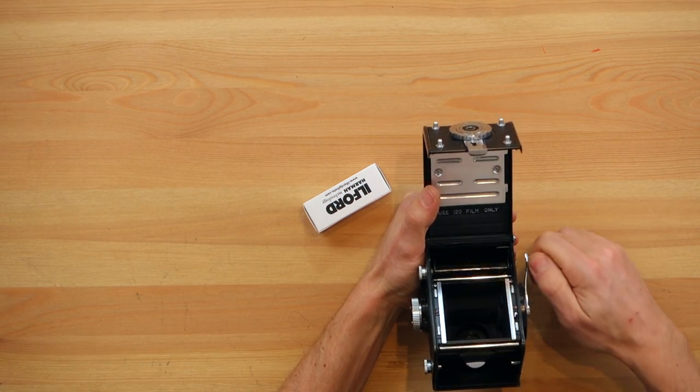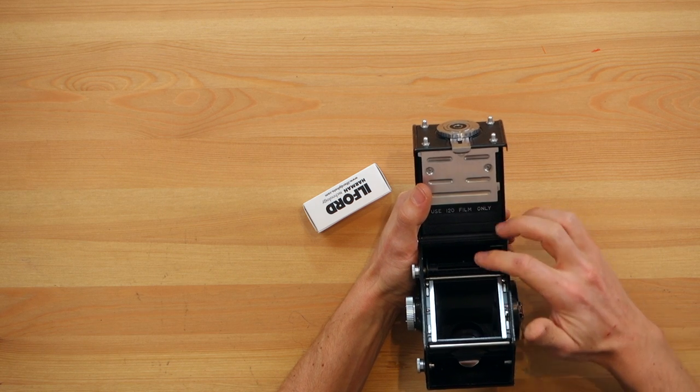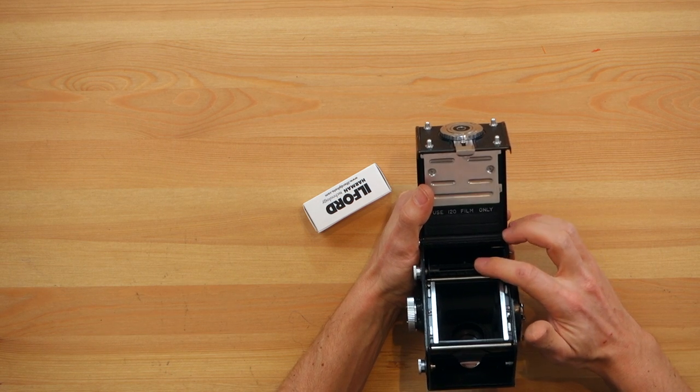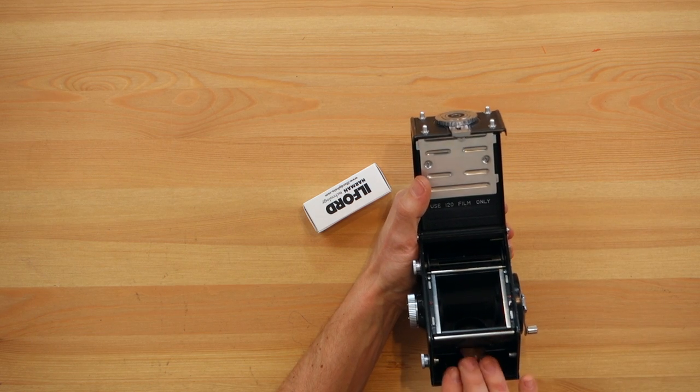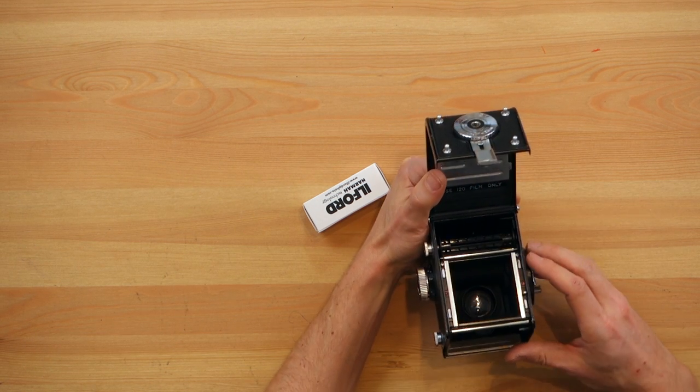As you can see when I start winding, that's the one that turns. That's the way you know which one is supposed to be the empty one. The film will go from being in here going all the way into that one.